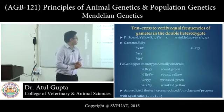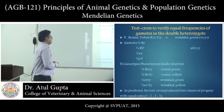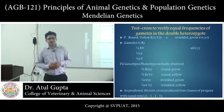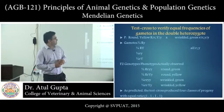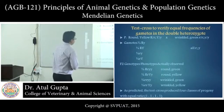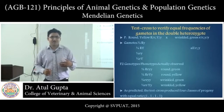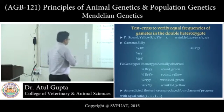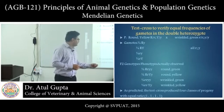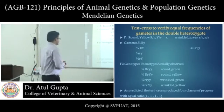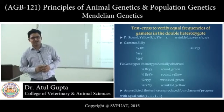A test cross also verifies equal frequency of gametes in the double heterozygote — that is, in a dihybrid cross. If an individual with unknown genotype is crossed with wrinkled green (homozygous recessive), in the F1 we got all yellow and round individuals. When we perform the test cross in F2, we get a ratio of 1:1:1:1 — the genotypic and phenotypic ratio is 1:1:1:1 in the dihybrid cross.